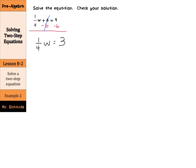And at this point, instead of dividing by 1 fourth on both sides, we're going to multiply by the reciprocal, which is just 4, or 4 over 1. So we'll multiply by that 4 on both sides, and this cancels. And we're left with w equals 3 times 4, which is 12.